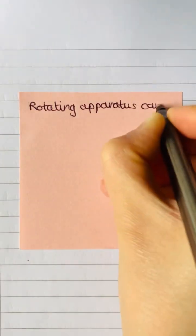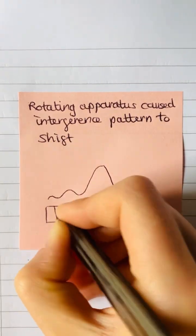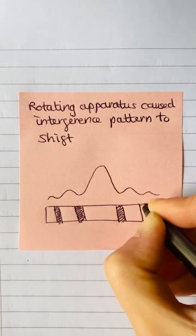Rotating the apparatus by 90 degrees would change this time difference and change the phase difference between the two light beams, so the interference pattern shifted.